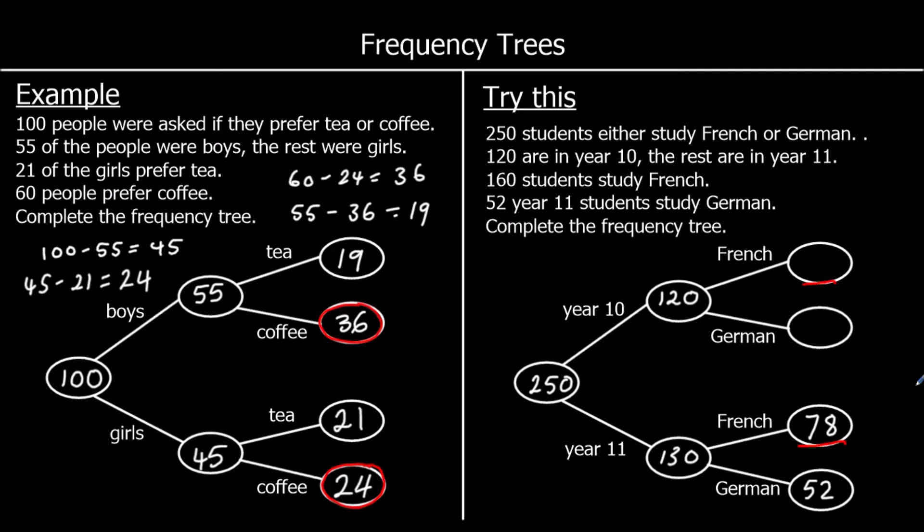And we were told 160 study French. So 160 take away 78, that would be 82. And the missing box is going to be 120 take away 82. So what do you have to add on to 82 to get to 120? 18 to 100, and then another 20. So 38.